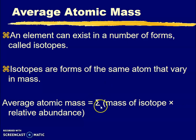summation of the mass of isotope times relative abundance. Depending on the element, you may have two, three, or four isotopes. For each isotope, you take its mass times its relative abundance, and then add those all up together.